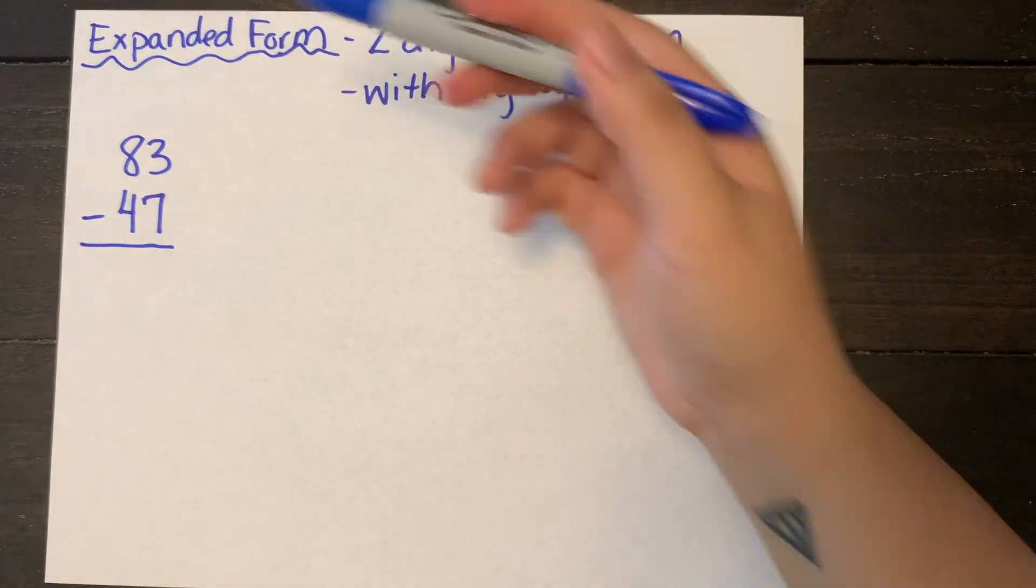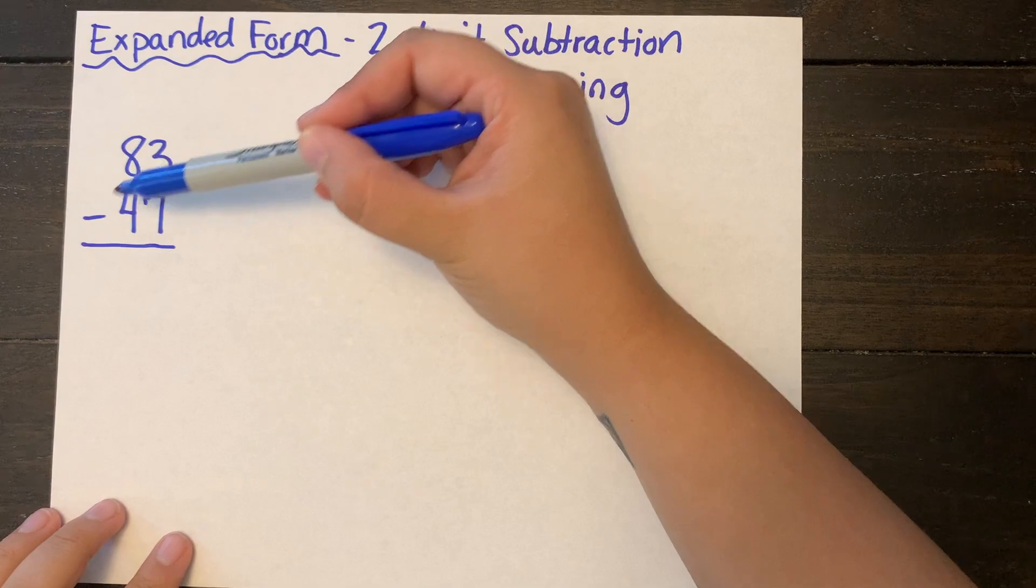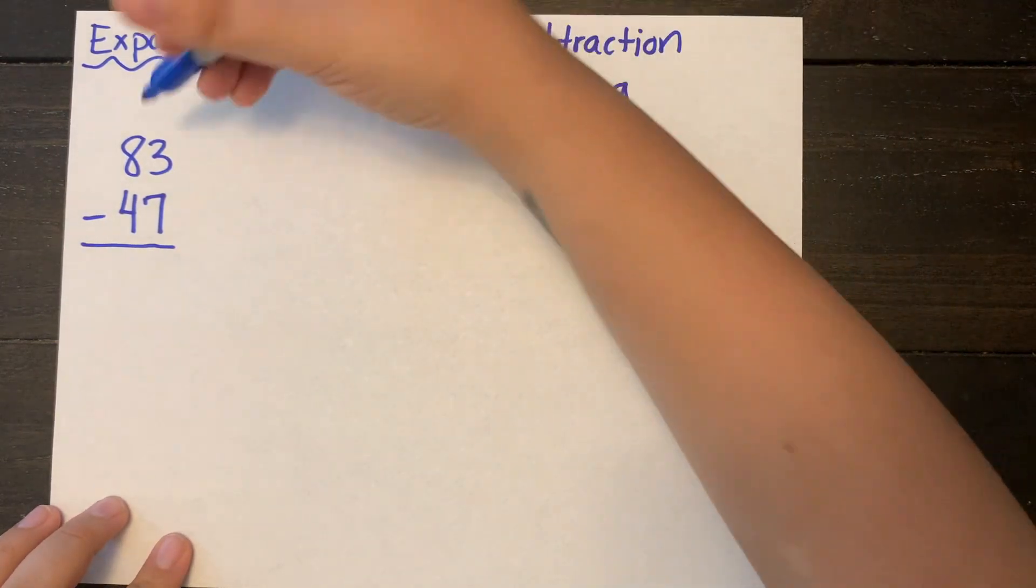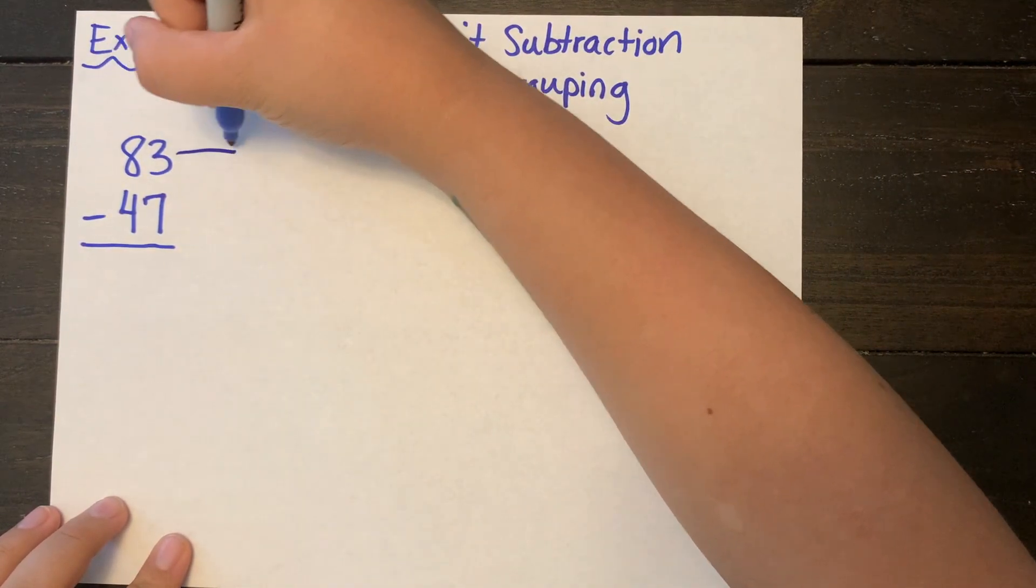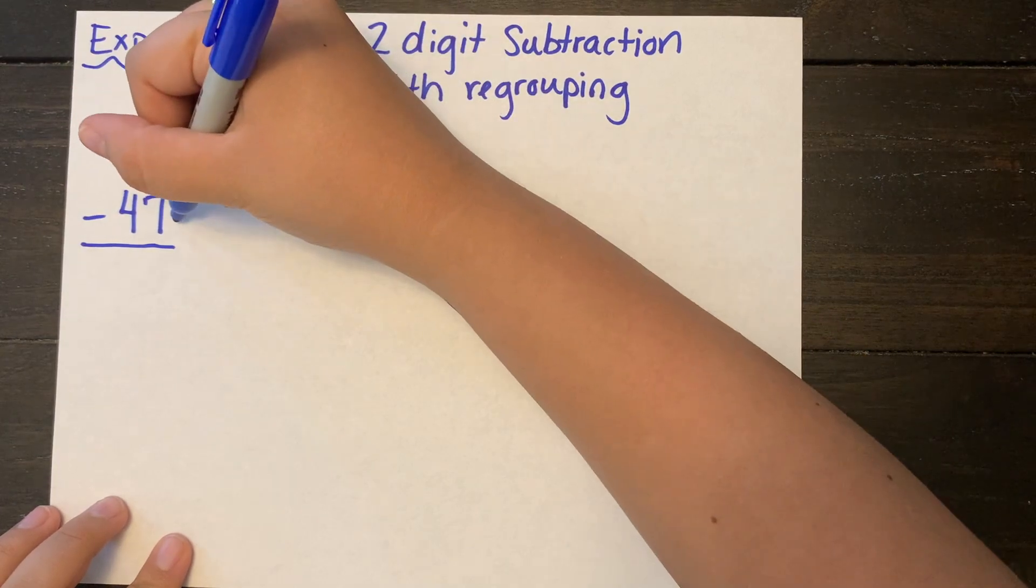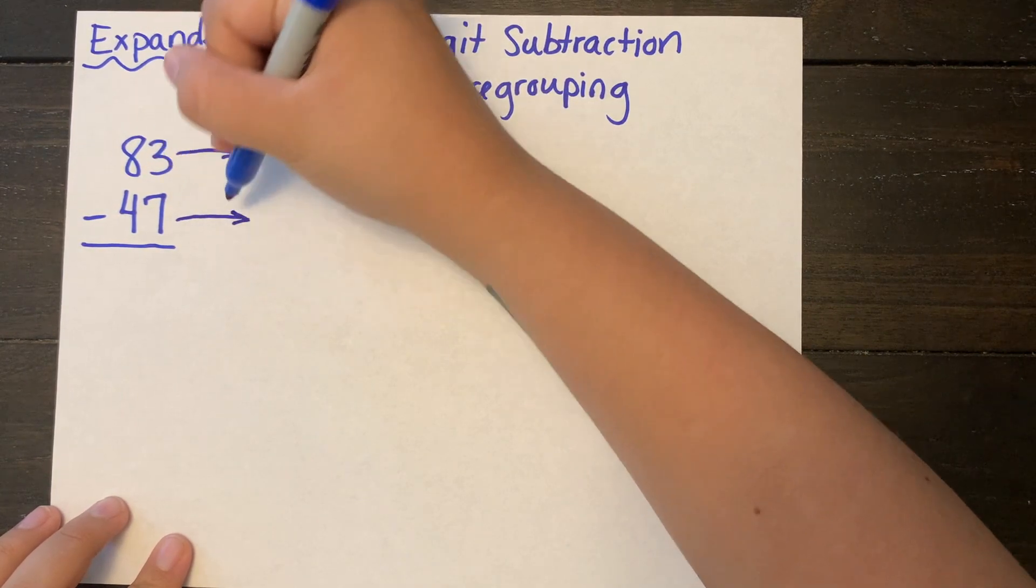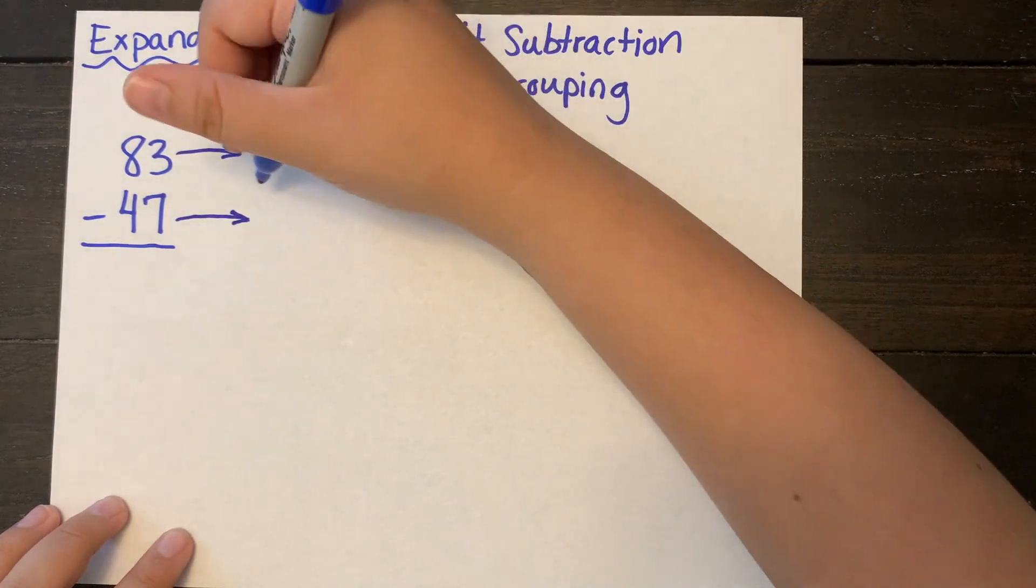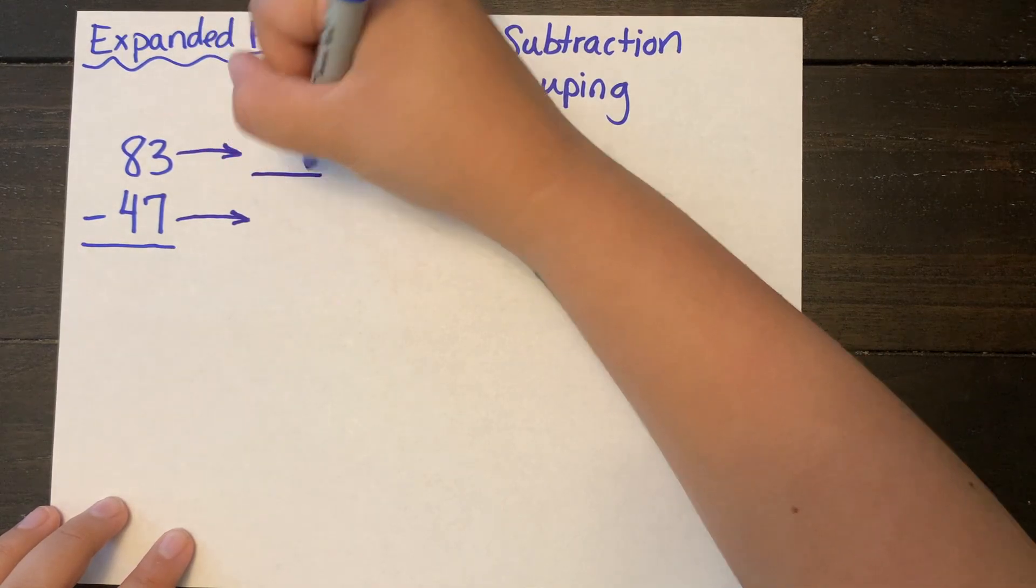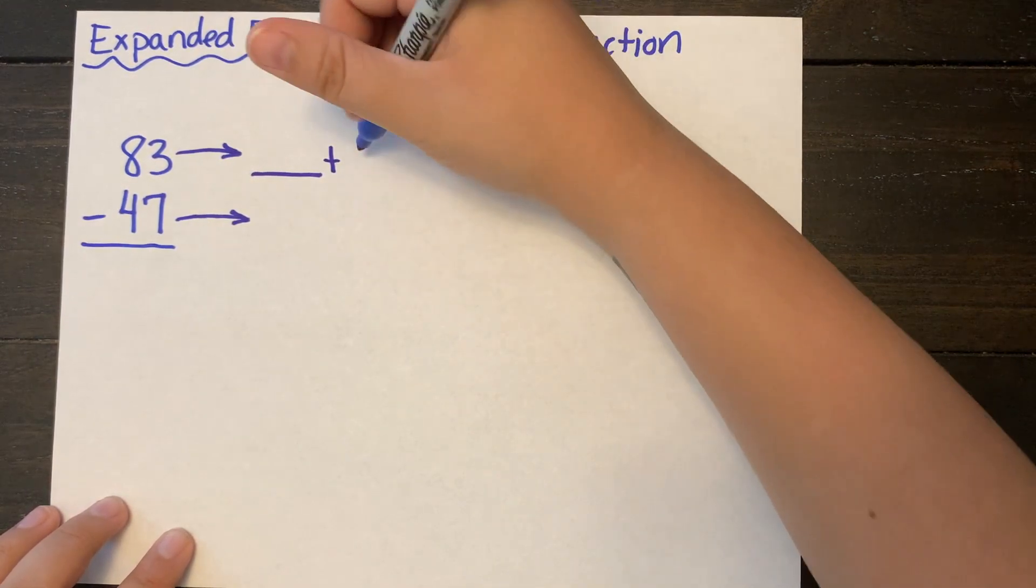So today I'm going to be subtracting 83 minus 47. First I'm going to draw out my arrows. Those are going to show where I'm going to expand out my numbers. Then I'm going to draw my lines for my placeholders for when I expand out those numbers.